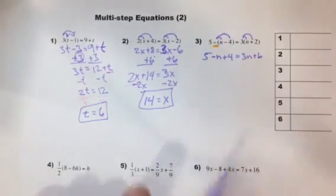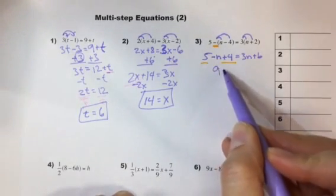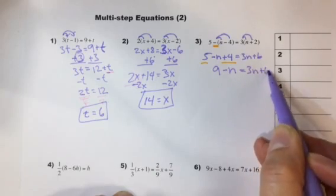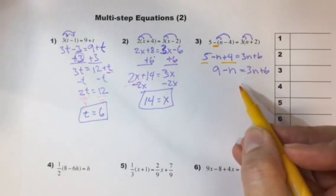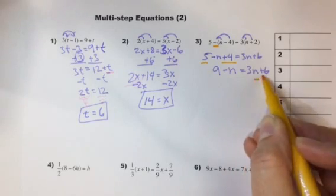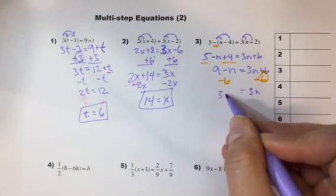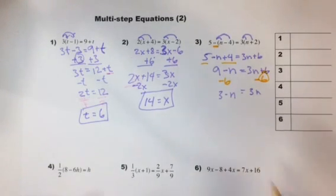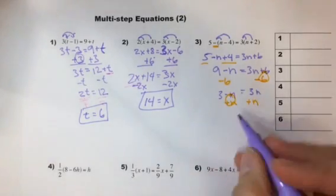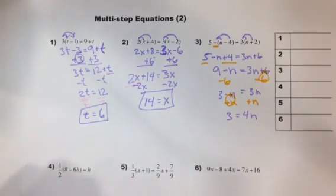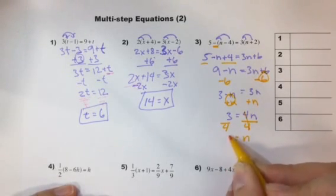From here we're just combining like terms. So 5 and 4 are going to make 9. So it's 9 minus n equals 3n plus 6. And then we need to subtract our constant to zero our constant and then we're going to subtract our variable. So let's do this where we're subtracting 6 from each side. That gets zeroed. And we end up with 3 minus n. And then we need to add n to both sides in order to zero that variable. So 3 is equal to 4n and then we want to know just what 1n is. So we're going to divide both sides by 4. So this goes to 1 and then n is equal to 3 quarters.